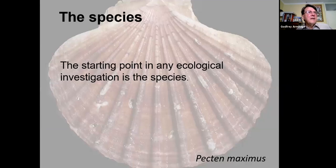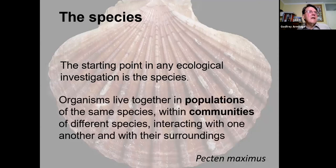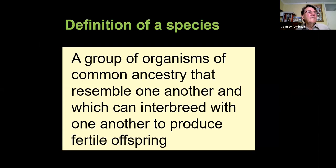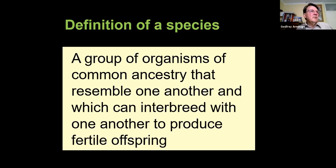Pecten maximus is an example of a species — the starting point in any ecological investigation. Organisms live together in populations of the same species, within communities of different species interacting with one another and with their surroundings. A species can be defined as a group of organisms of common ancestry that resemble one another and can interbreed to produce fertile offspring — though this isn't very useful for asexually reproducing species like amoeba, or for fossil species. For those we must rely heavily on physical characteristics including DNA and other circumstantial evidence.